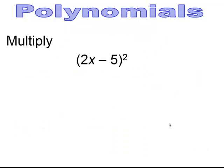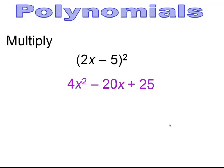Pause and try. Using the shortcut: first term squared = (2x)² = 4x²; middle term = 2 × 2x × 5 = 20x, and since there's a minus, it's −20x; last term = 5² = +25. Answer: 4x² − 20x + 25. You could always write it twice and multiply out, but it's good to learn the shortcut.